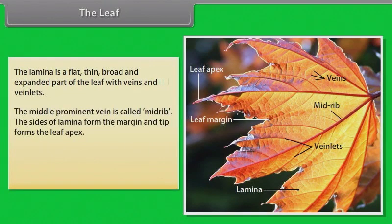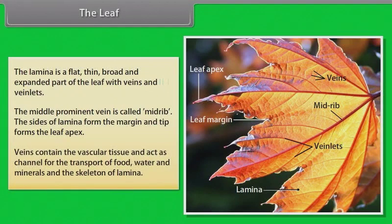The middle prominent vein is called midrib. The sides of the lamina form the margin and the tip forms the leaf apex. Veins contain the vascular tissue and act as channels for the transport of food, water and minerals, and form the skeleton of the lamina.